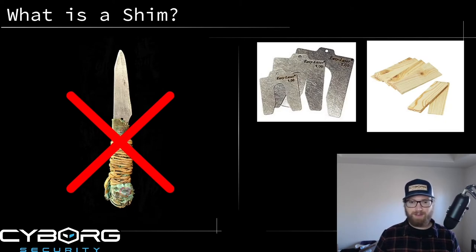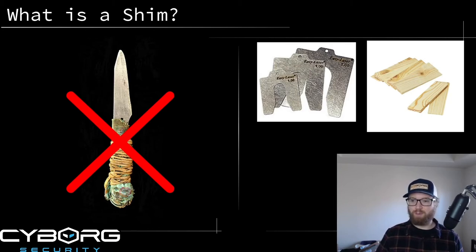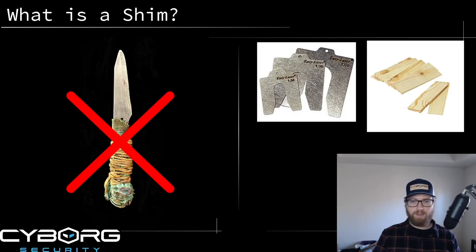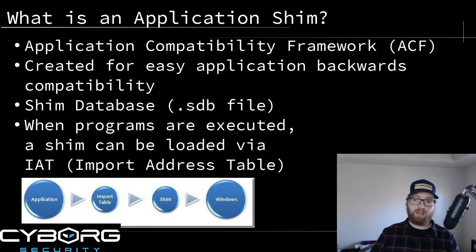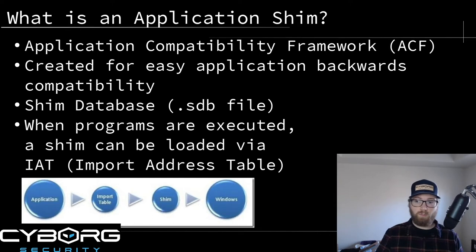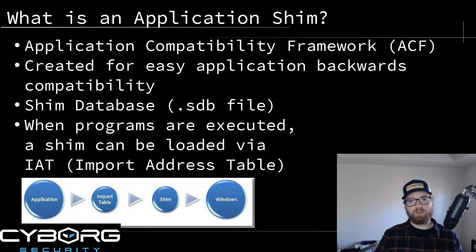Your first question when talking about application shimming might be: what even is a shim? It's not what's on the left - that is a shiv, which is a prison weapon, so don't get confused. What's on the right is the physical example. In real life, a shim is a thin piece of wood or metal that you shove between small cracks or holes to align things in woodworking or building projects.